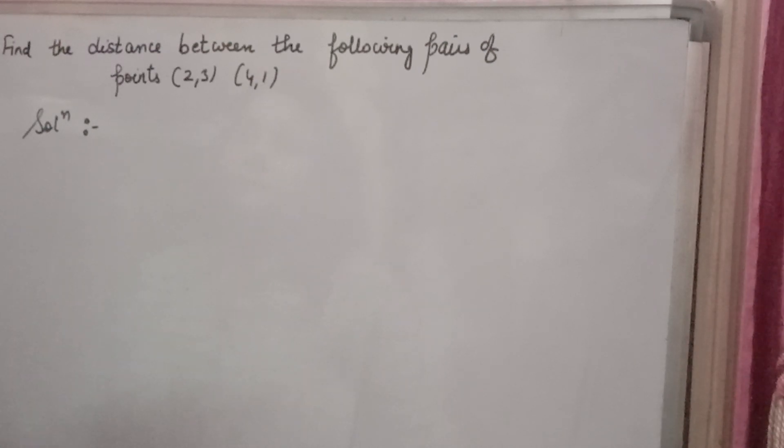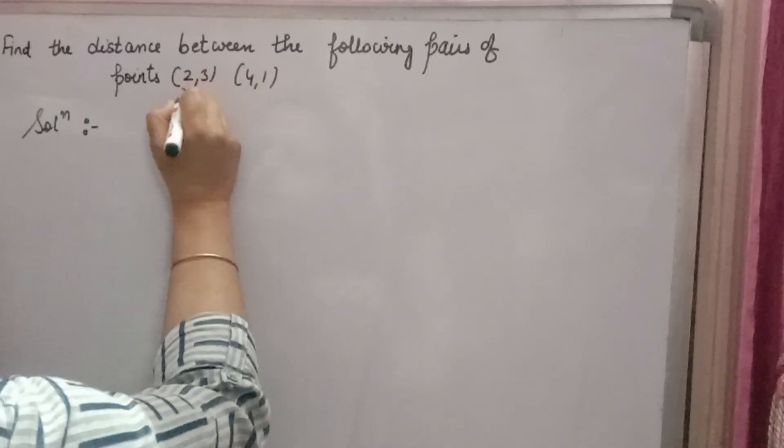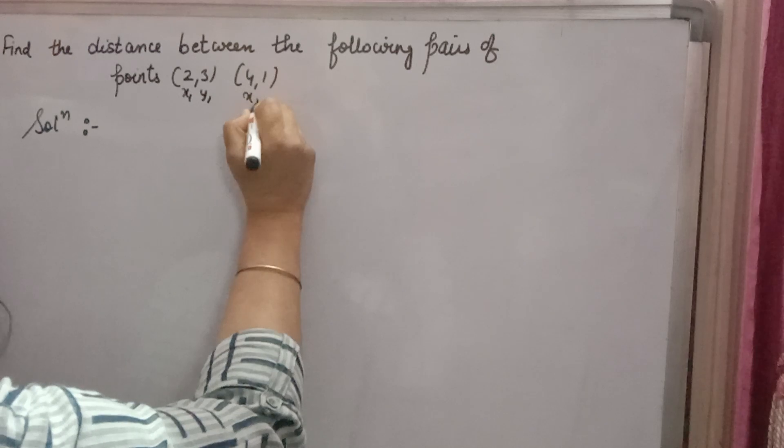Find the distance between the following pairs of points: (2, 3) and (4, 1). This is x1, this is y1, this is x2, this is y2.